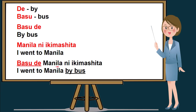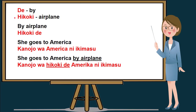Let me read this sentence. Please follow after me: basu de Manila ni ikimashita. So in English it means I went to Manila by bus. Once again, basu de Manila ni ikimashita. I went to Manila by bus.